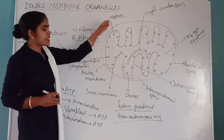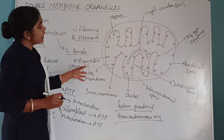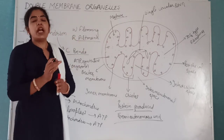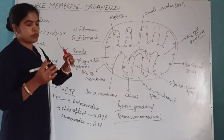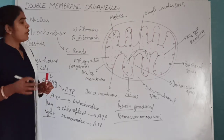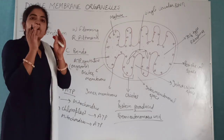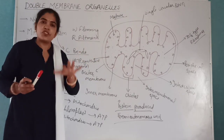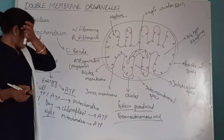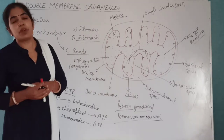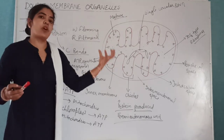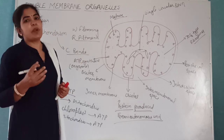Mitochondria are called the powerhouse of the cell and a semi-autonomous unit. The number and shape of mitochondria differ in different cells, depending on the physiological condition of the cell. Cells requiring more energy have a greater number of mitochondria. For example, oocytes contain the maximum number of mitochondria, and the middle piece of sperm also has a large number of mitochondria to provide energy for sperm movement.